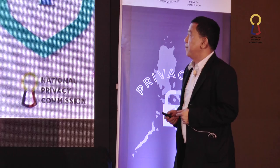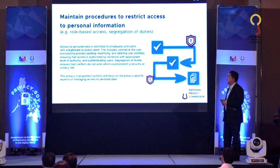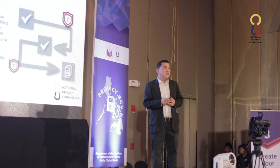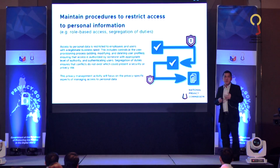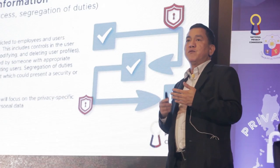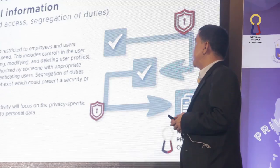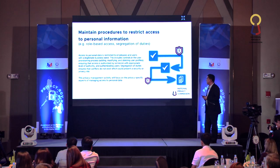Maintain procedures to restrict access to personal information. Access to personal data is restricted to employees and users with a legitimate business need. This includes controls in user provisioning, like adding, modifying, and deleting user profiles. Most organizations have a data privacy policy that allows only certain individuals a certain level of access to personal information. Segregation of duties ensures that conflicts do not exist, which could present a security or privacy risk.